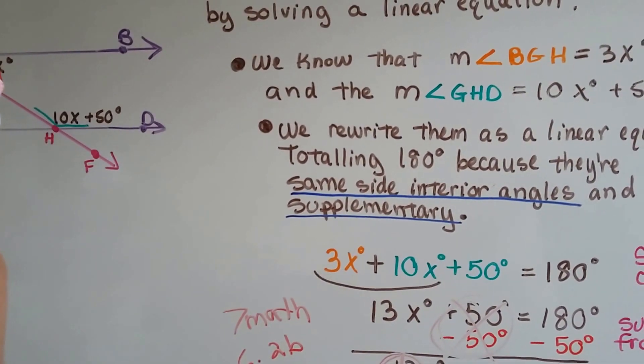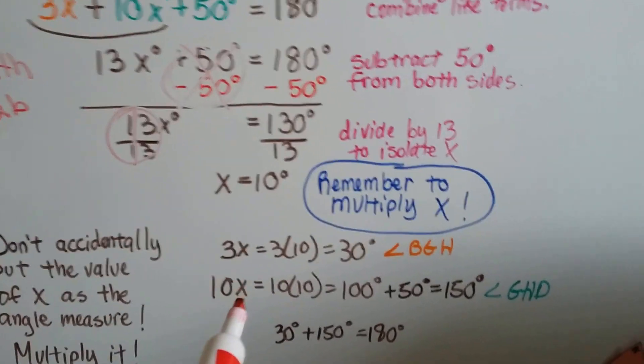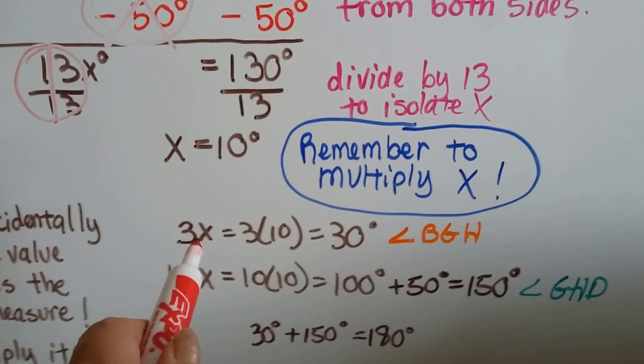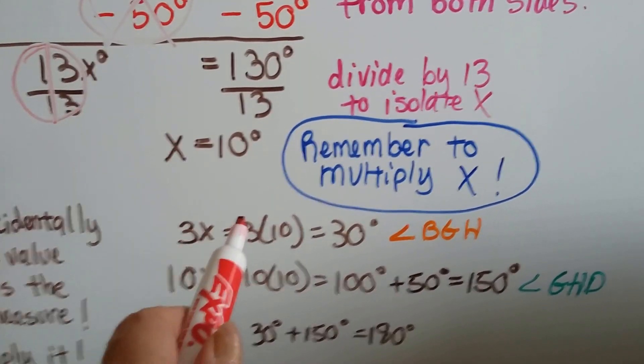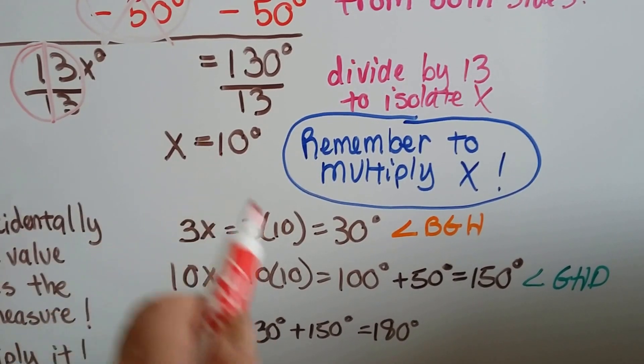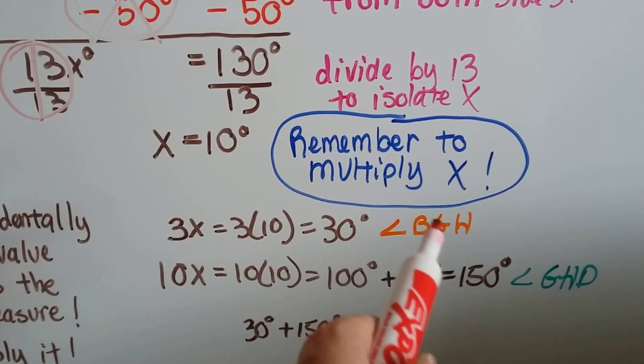It's 3x, it's not just x. So we need, for angle BGH, the orange one, we need 3x. That's 3 times the x, 3 times 10. That's 30 degrees. That's what that one measures.